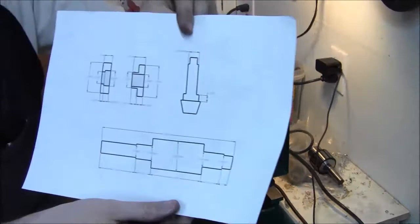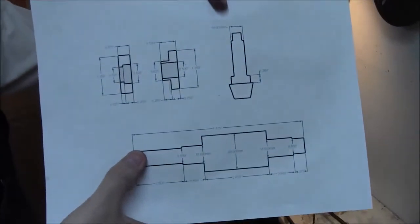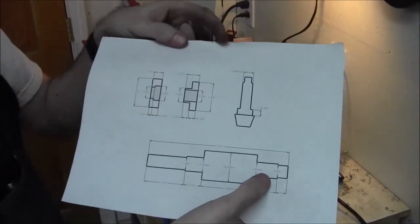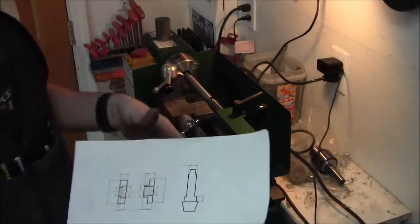Whatever that dimension is is what we'll bore out this piece for to go in the middle area there. So we're going to turn it just like this, we're going to have this in the chuck right now, chuck's grabbing right here, and we'll turn these two bits first and that'll be what the chuck will grab when we flip it around.